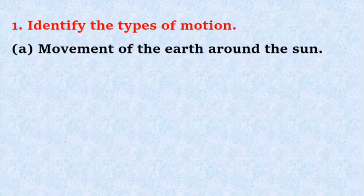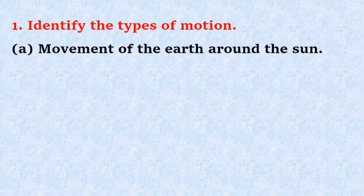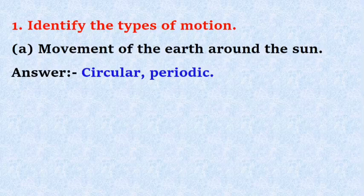Question Number 1. Identify the types of motion. A. Movement of the earth around the sun. Answer is Circular Periodic.